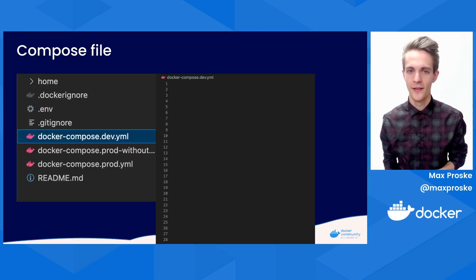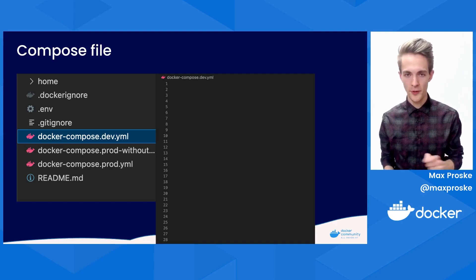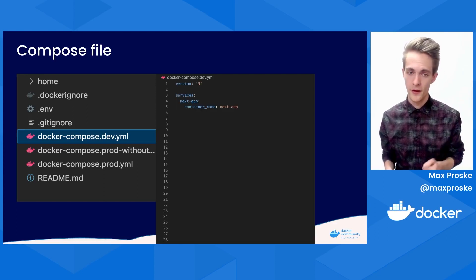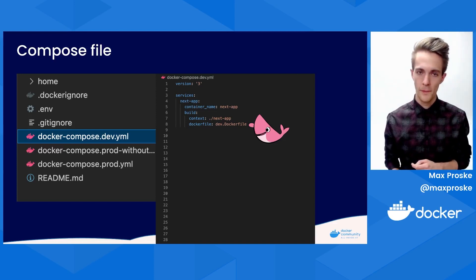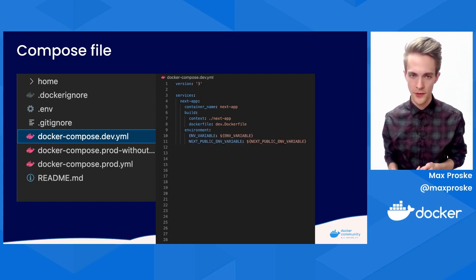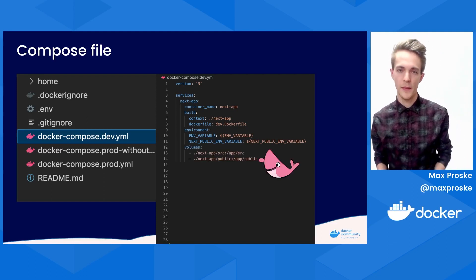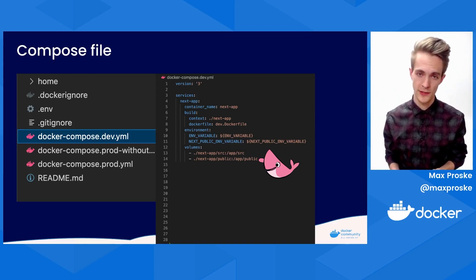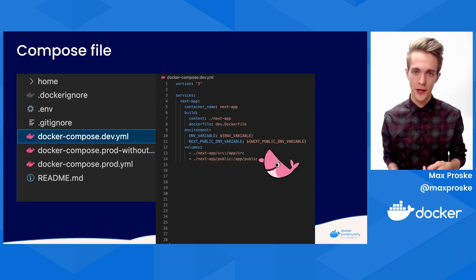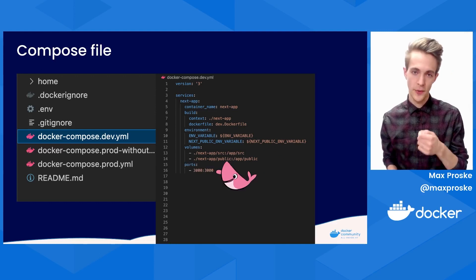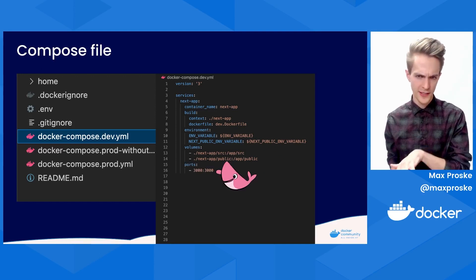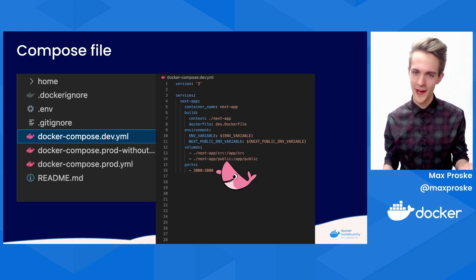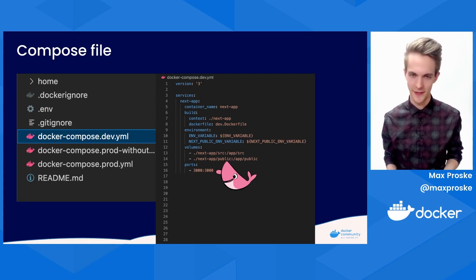Now here's where Compose comes in. We have some Compose files sitting in the root of our project that tell Docker to give the recipe it's building a name. It points to the recipe, passes some private and public environment variables, and it syncs the source and the public directories between your local PC and Docker land so changes are picked up and hot reloading works. If this connection was severed, nothing would update. And it exposes the port of our Next.js app on the right-hand side to port 3000 on your PC on the left-hand side. And if port 3000 is already in use locally, you could just change this to 3001.